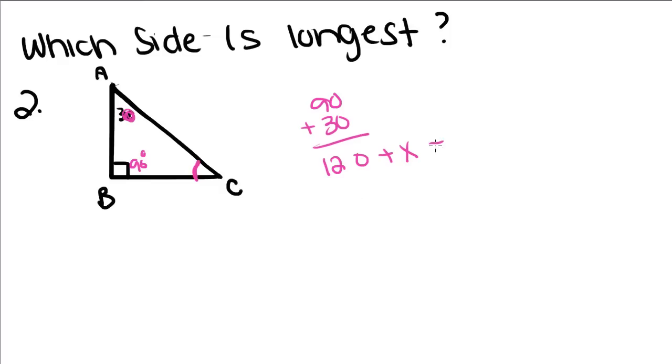And so 120 plus x is equal to 180. Because remember, the interior angles of a triangle sum up to 180. So then if we subtract 120 over, we get x is equal to 60. So this is equal to 60.